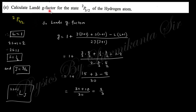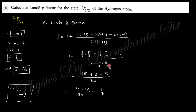Next: calculate the Landé g-factor for the ²P₃/₂ state of hydrogen. Here L=1 (P state), 2S+1=2 so S=1/2, and J=3/2 from the notation. Substituting into the Landé g-factor formula gives g = 4/3.